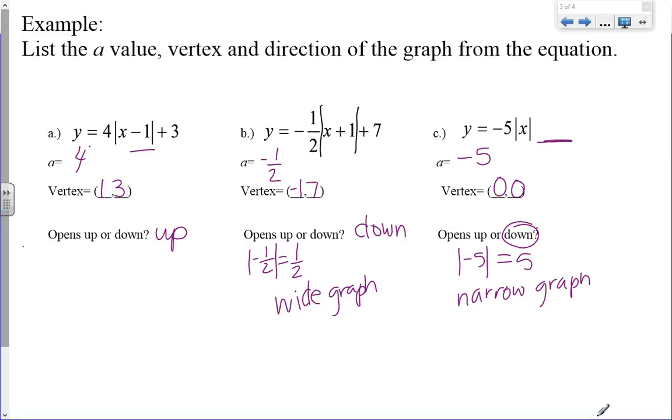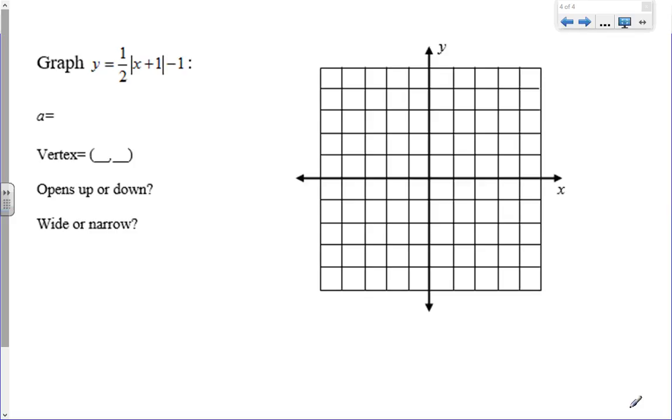So let's take a look at how we graph. We need to graph the equation y equals 1 half times the absolute value of x plus 1 minus 1. So my a value is 1 half.